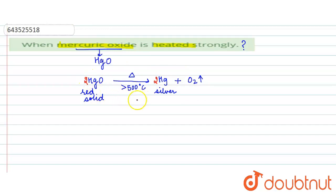So generally the change in color from red solid HgO to silver color shows that reaction is completed.